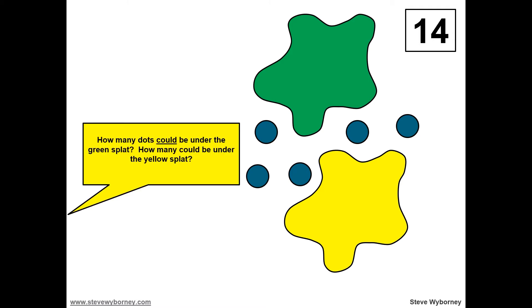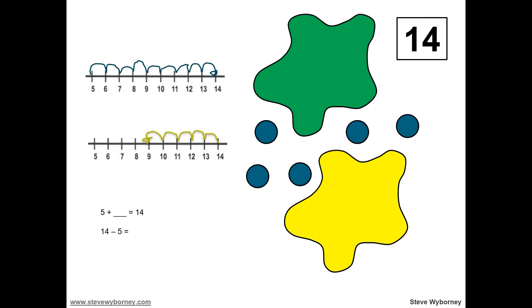How many dots could be under the green splat? How many dots could be under the yellow splat? First, we need to figure out how many dots are under the splats. We started with 14 dots. How many dots are not under any splats? We can still see five dots. How many dots are hidden then in both splats? How do you know?